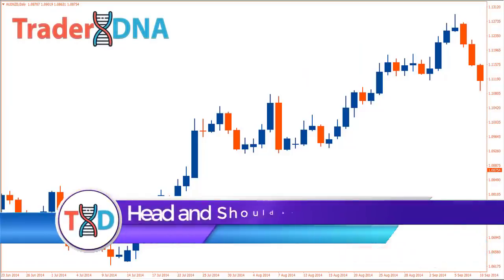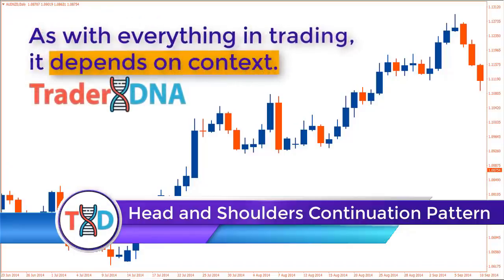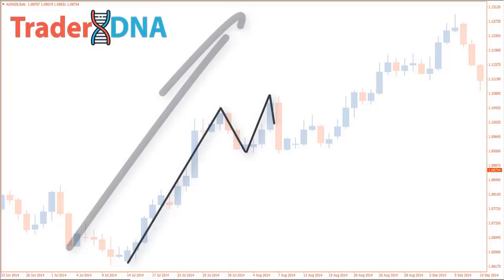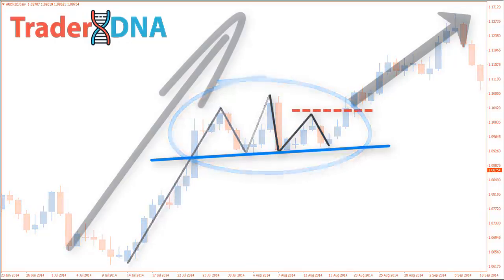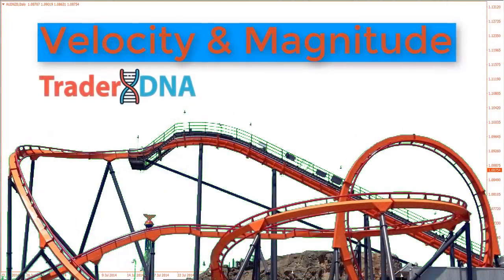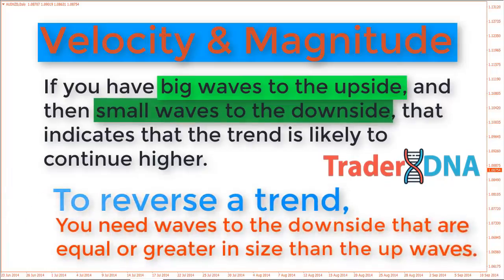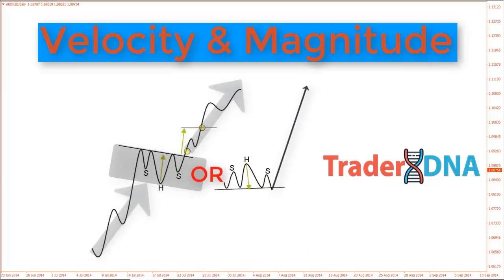Head and shoulders continuation pattern. The head and shoulders is not always a reversal pattern — as with everything in trading, it depends on context. If the pattern looks very small compared to the price waves around it, it could be a continuation pattern. For example, if the trend is up with big price waves to the upside and then a very small head and shoulders forms, it is quite likely the price could continue higher overall. A very important element to chart analysis is velocity and magnitude: if you have big waves to the upside and then small waves to the downside, that indicates the trend is likely to continue higher.